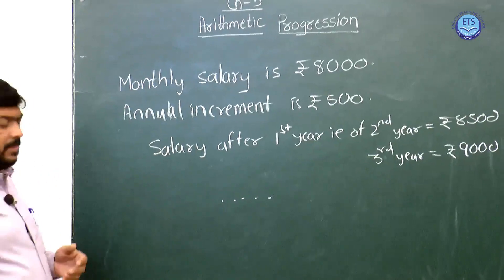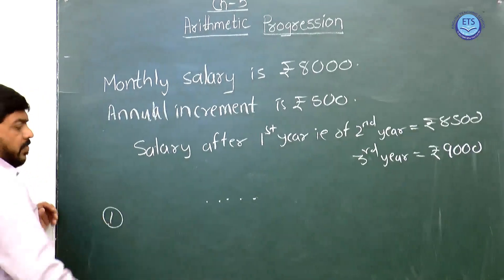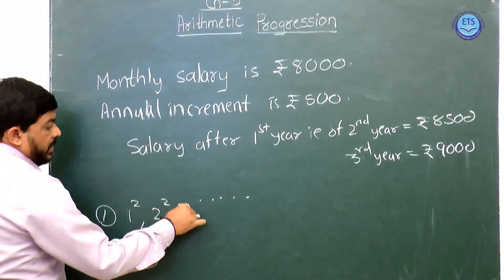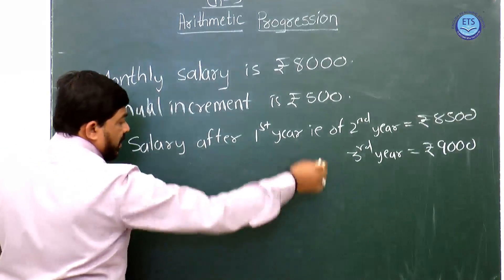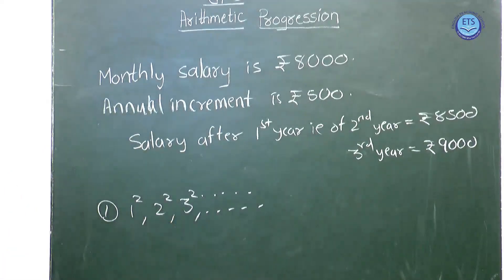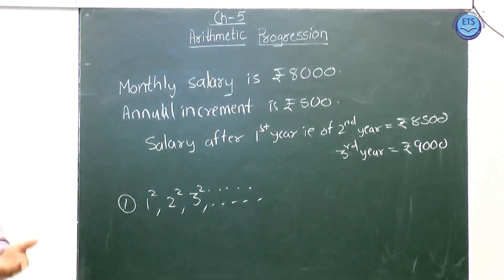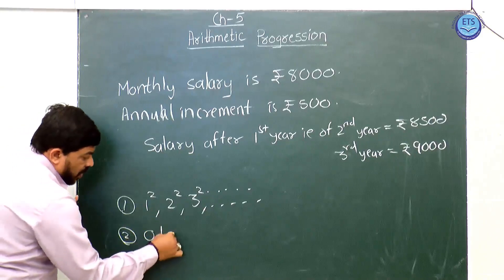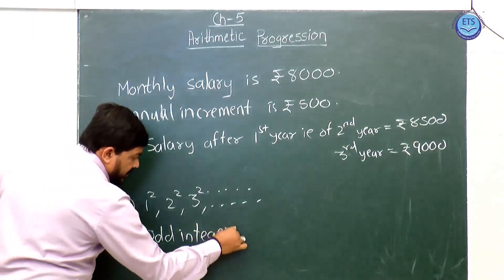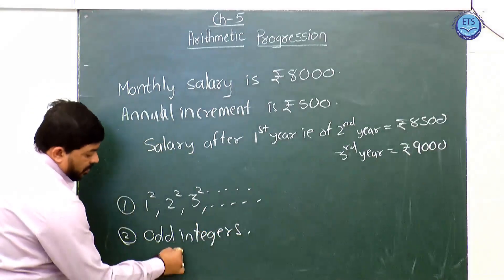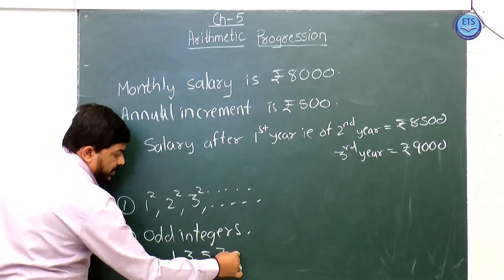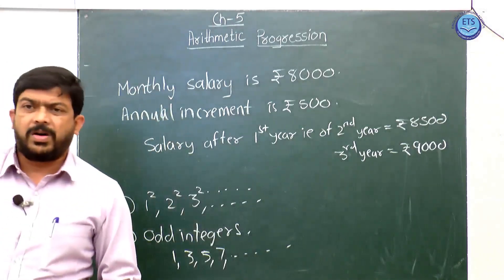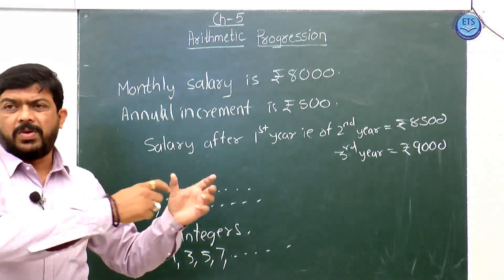For the third year it will increase to 9000 and so on. For another example, suppose we are given a pattern of numbers like 1 square, 2 square, 3 square and so on — this is also a type of pattern or progression. Another example: taking odd integers 1, 3, 5, 7 and so on. These are examples of patterns found in Maths.